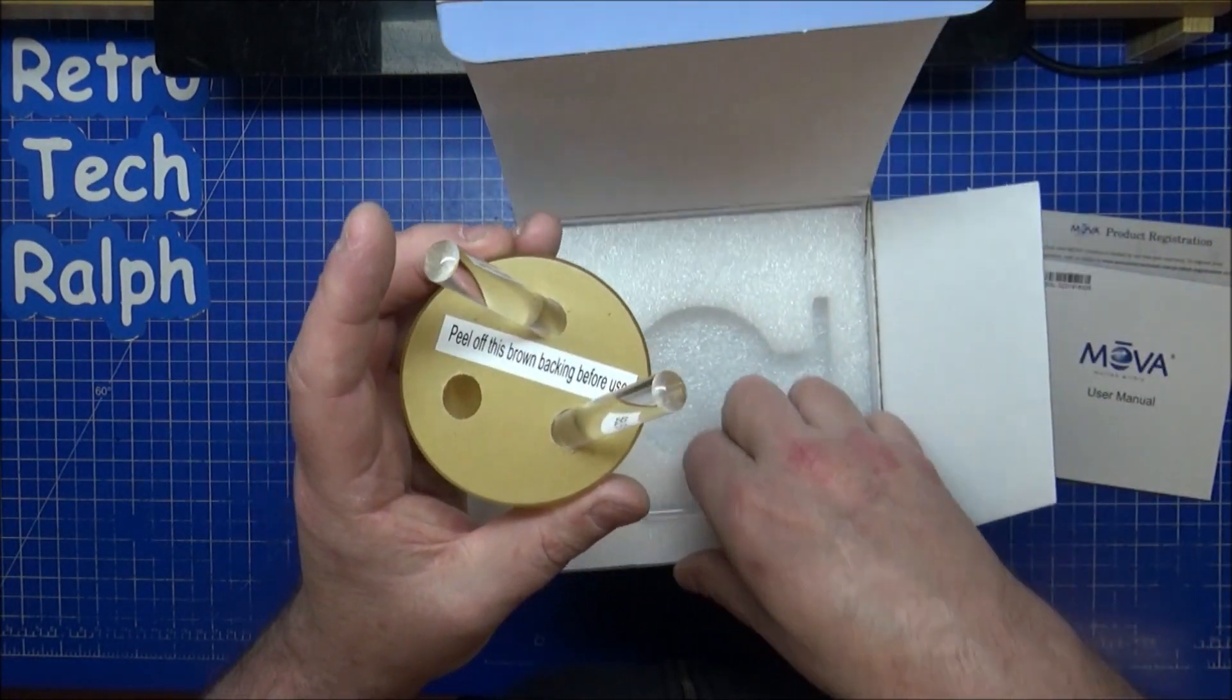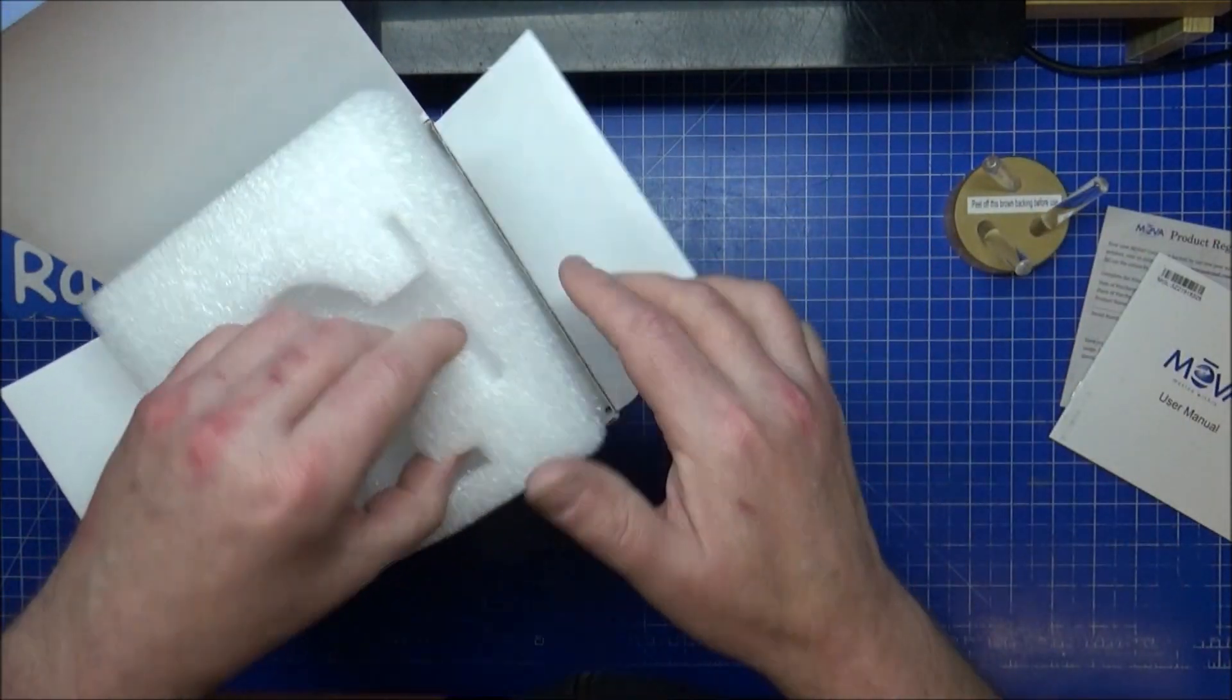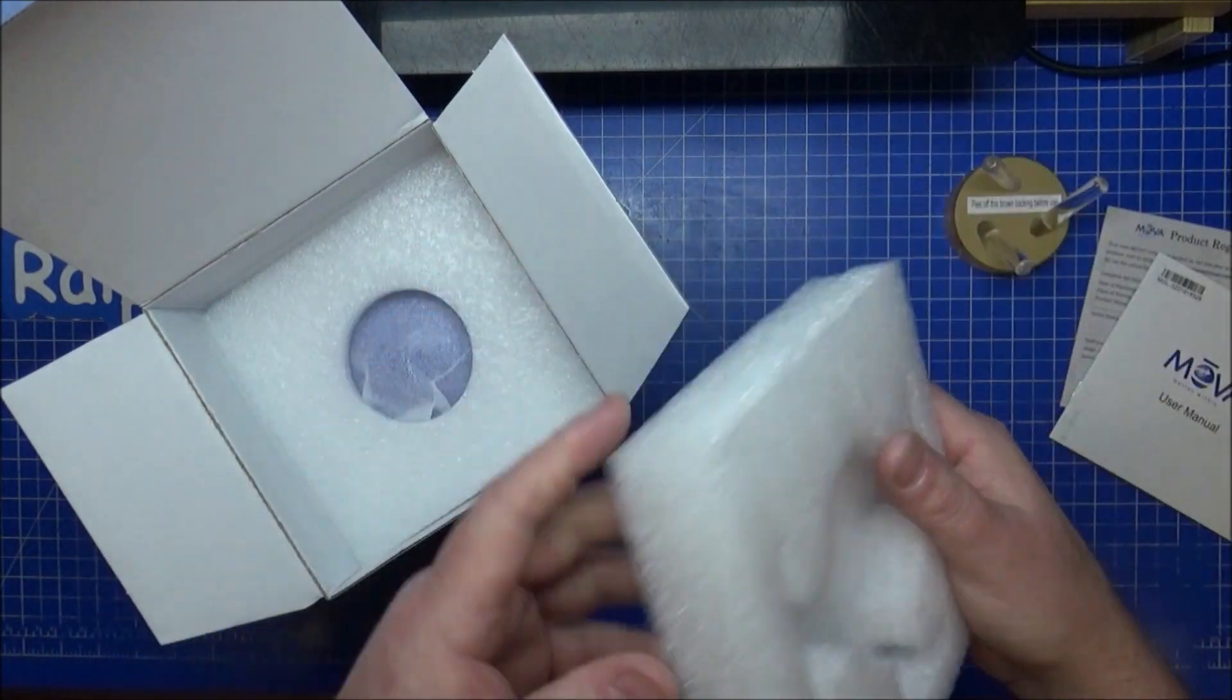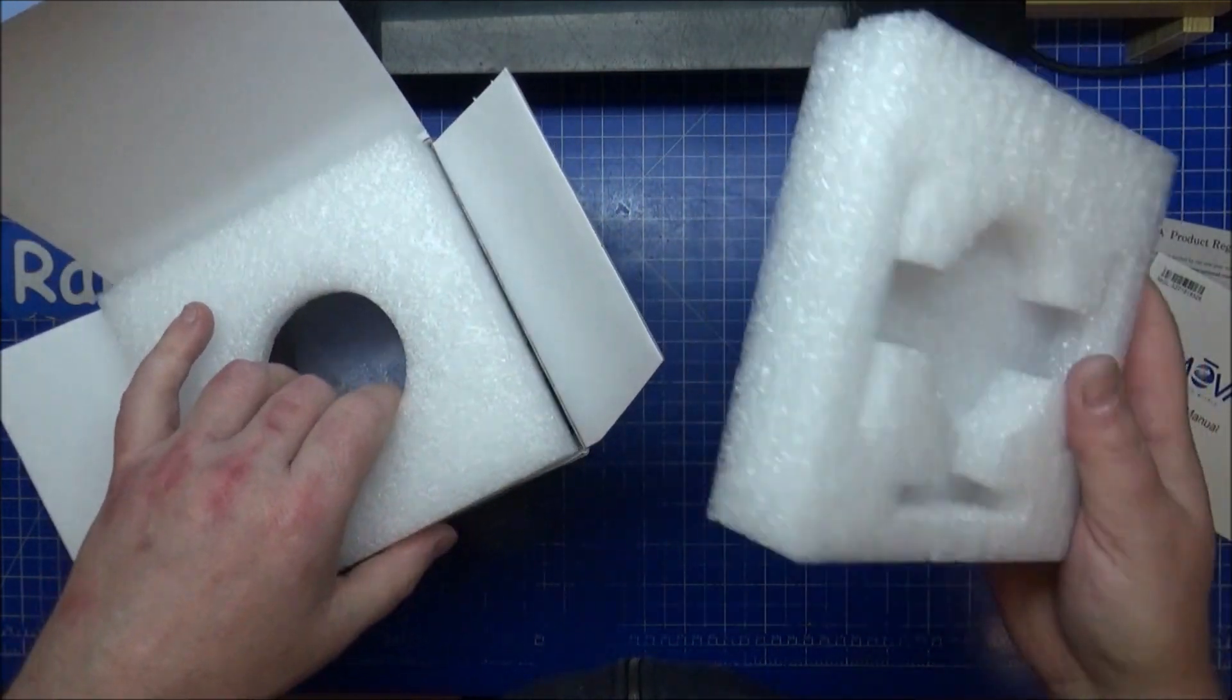They never seem to go in here and they're always very wobbly, but once they're in with the weight on top they're perfectly fine. So get that down over there, polystyrene. We keep this anyway even if we were throwing this in the bin we'd reuse this.